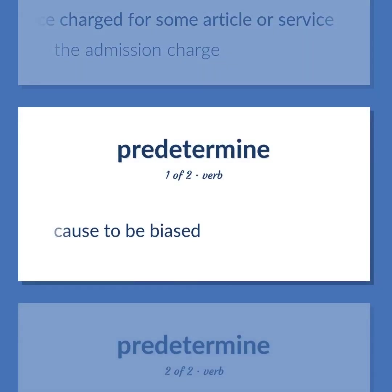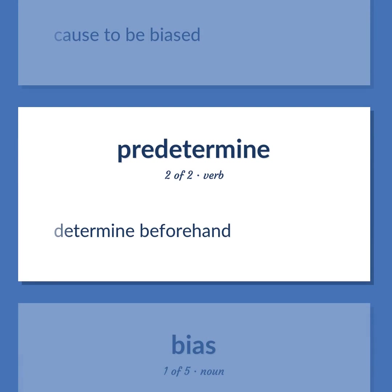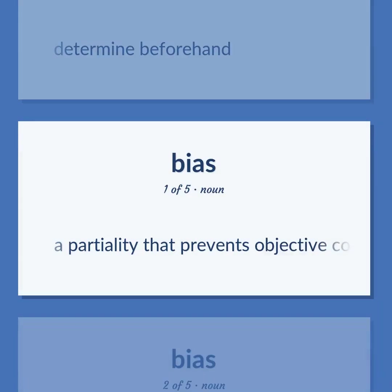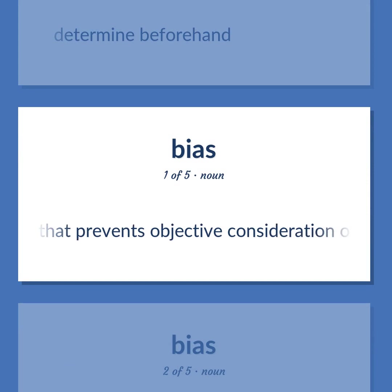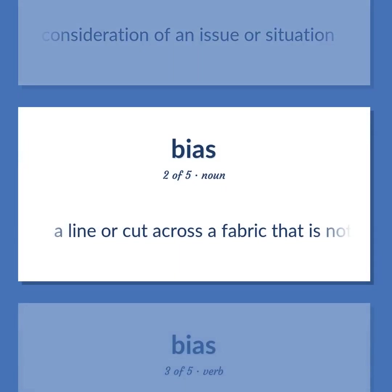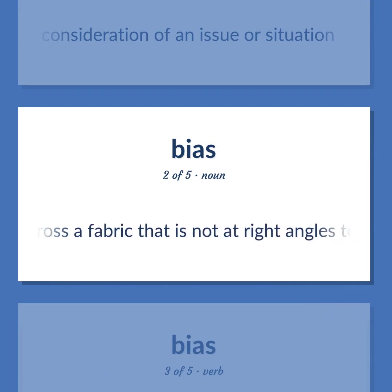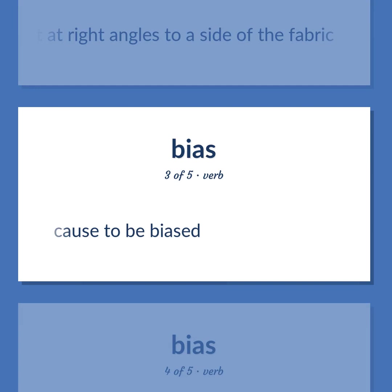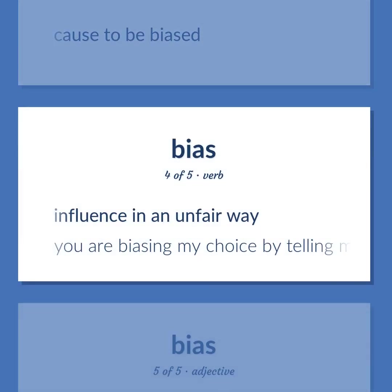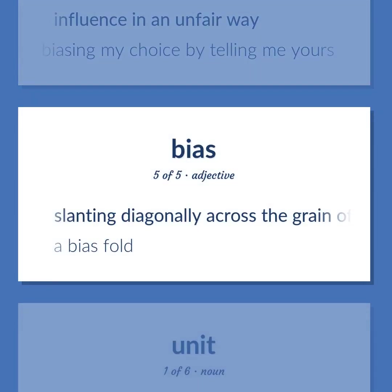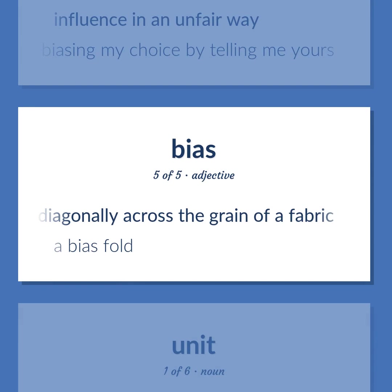Bias: To cause to be biased. To determine beforehand. A partiality that prevents objective consideration of an issue or situation. A line or cut across a fabric that is not at right angles to a side of the fabric. To cause to be biased; to influence in an unfair way. Example: You are biasing my choice by telling me yours. Slanting diagonally across the grain of a fabric — a bias fold.